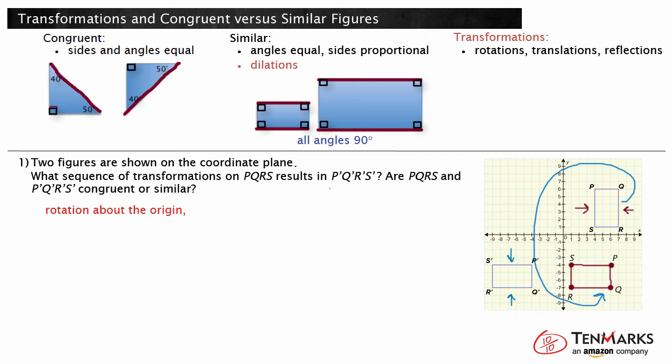Now the rotated rectangle and P', Q', R', S' are in the same orientation, but one is shifted. A translation is a rigid transformation that will shift one figure to the other. A translation of 10 units to the left will shift the rotated rectangle onto P', Q', R', S'.